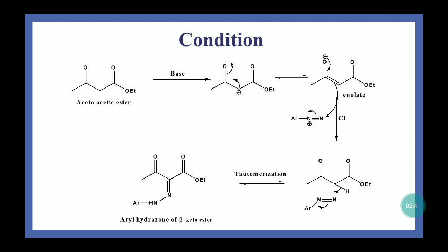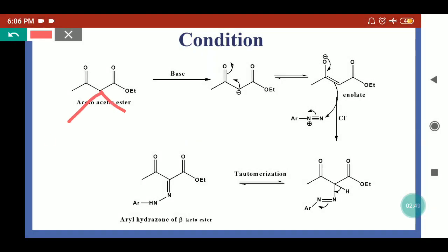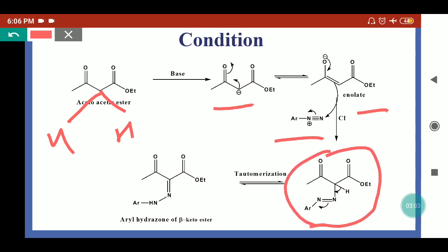Now if we are treating an active methylene compound which has a beta-keto ester with no substitution — meaning two protons are present — when treated with base, a carbanion forms, which is stabilized by the enolate. This enolate reacts with the diazonium salt and forms the azo intermediate. In this case, where no substitution is present or one hydrogen remains, a prototropic shift takes place. By tautomerization we get the aryl hydrazone of the beta-keto ester. In these cases, no elimination of acetic acid takes place.